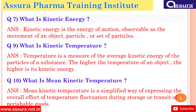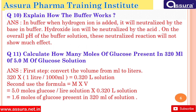What is mean kinetic temperature? Mean kinetic temperature is a simplified way of expressing the overall effect of temperature fluctuations during storage or transit of perishable goods. Explain how a buffer works. In a buffer, when a hydrogen ion is added it will be neutralized by the base; hydroxide ions will be neutralized by the acid. Overall, the pH of the buffer solution will not show much change from these neutralization reactions.